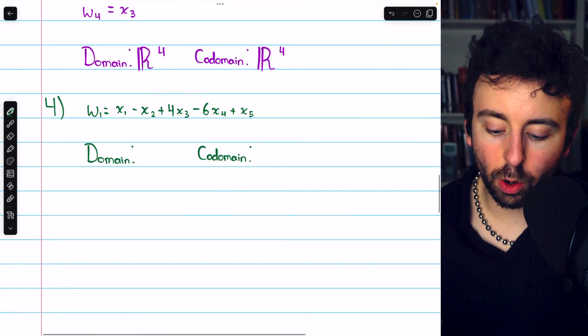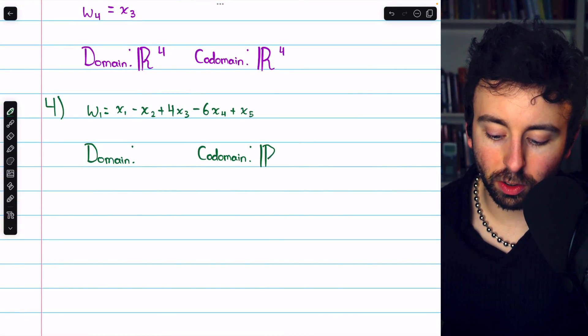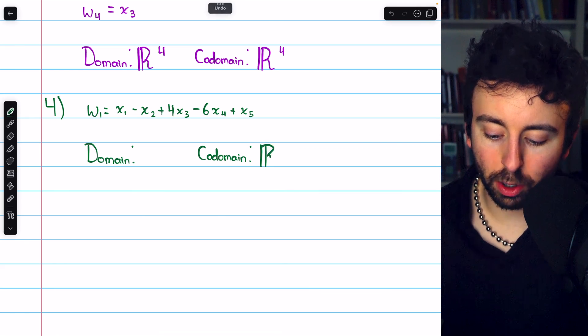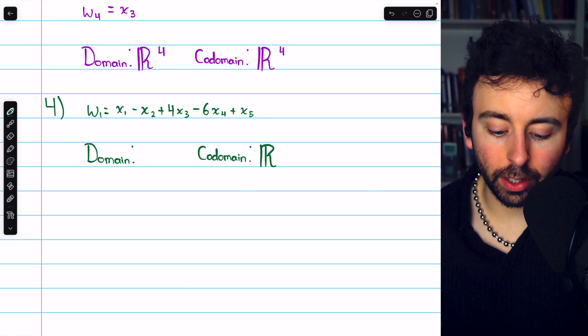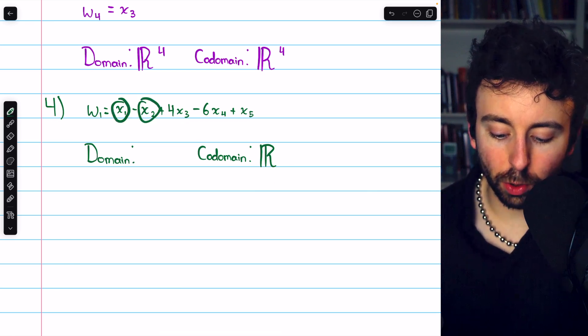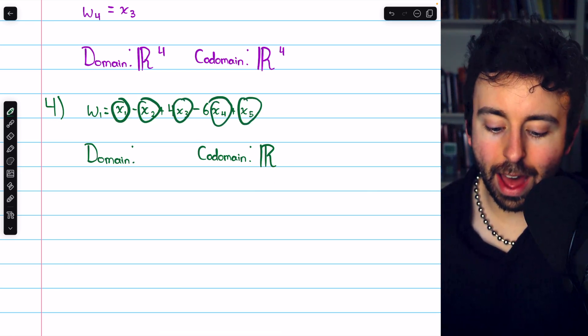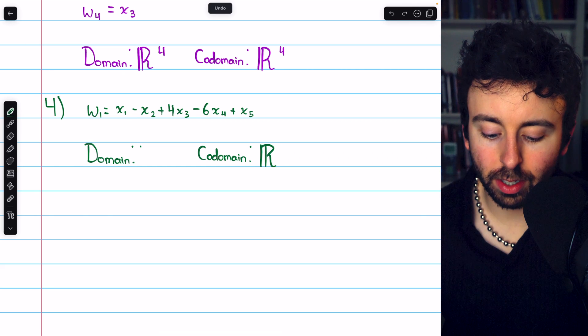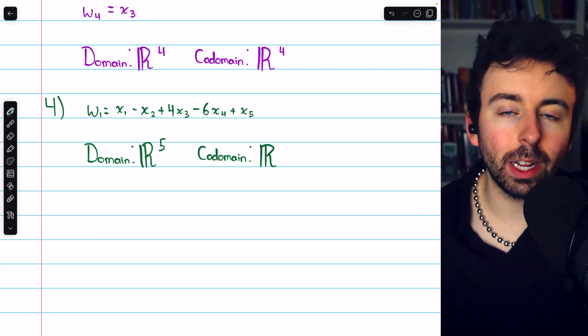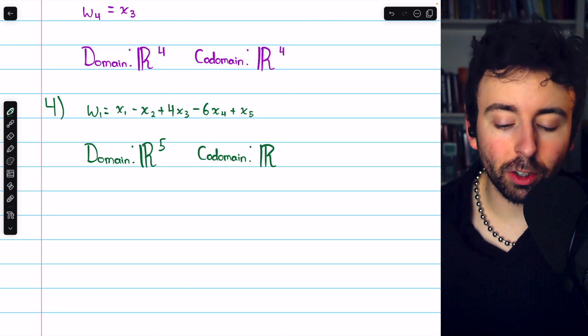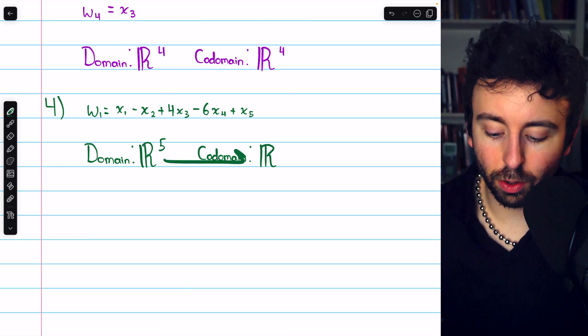In problem four, we have one equation. So the codomain is actually just the real numbers. There's one equation describing how to get that one real number output. On the other hand, we have one, two, three, four, five separate input variables. So the domain is R⁵. This is a linear transformation or matrix transformation from R⁵ to R.